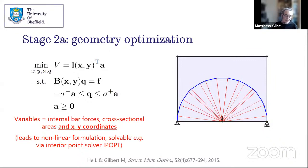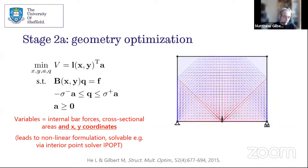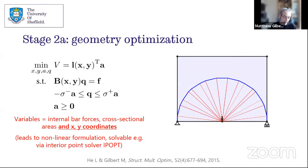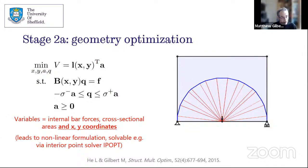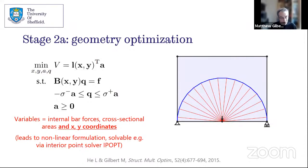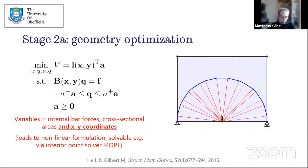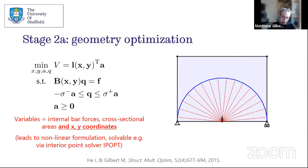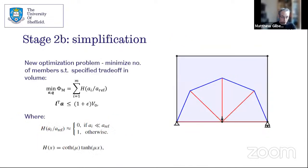Stage two makes a subtle change to the formulation: instead of only varying cross-sectional areas and member forces, we also change the XY coordinates of nodes. Because it's nonlinear, this is only applied to the solution from stage one — a small problem that's relatively easy to solve. In a half-wheel example, you end up with nicely evenly-spaced spokes after geometry optimization that weren't present before.